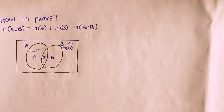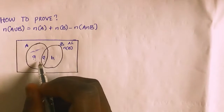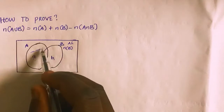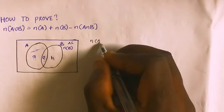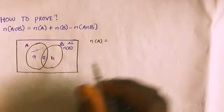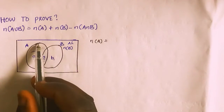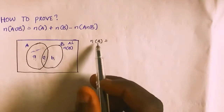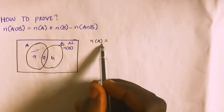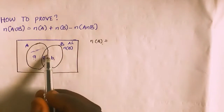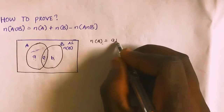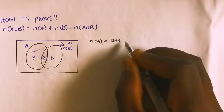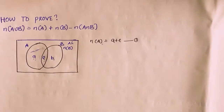The first thing I need to do is find the total elements present in set A. Cardinality means the total number of elements in a given set. So my cardinality of A equals A plus E. I'll call this equation 1.